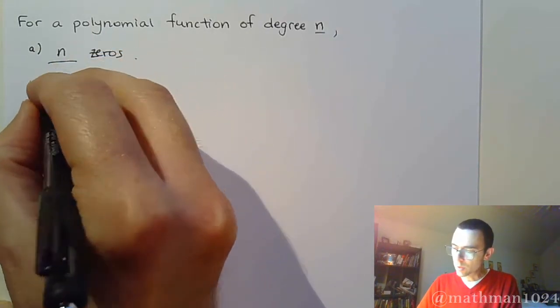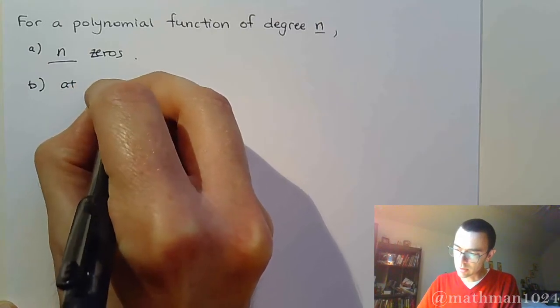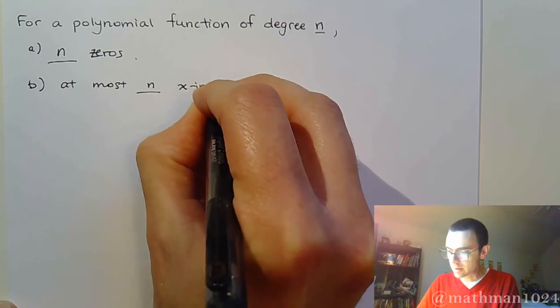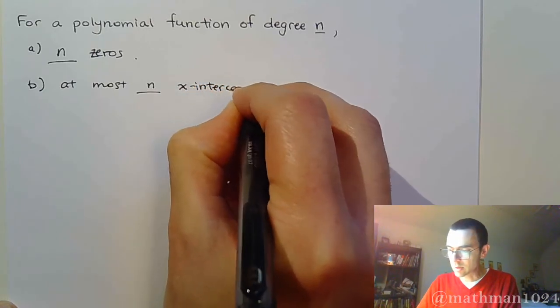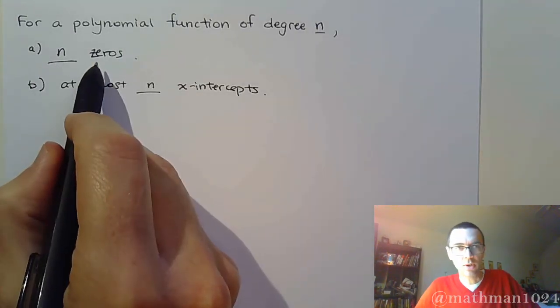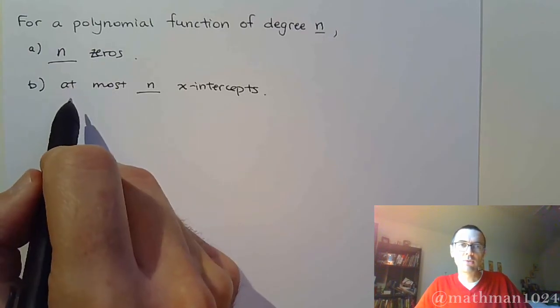It means that there will be, at most, n x-intercepts. Now, we talked about this and said that you only get an x-intercept if your zeros are real. So each real zero corresponds to an x-intercept. We always have n zeros. They could be complex, they could be imaginary, so we don't necessarily know that for sure.